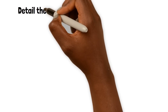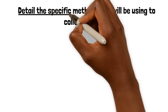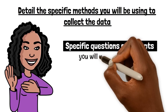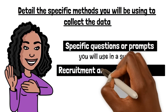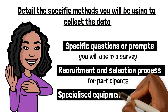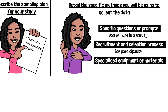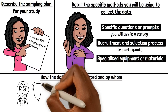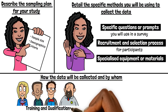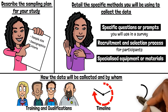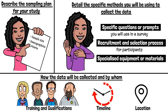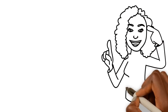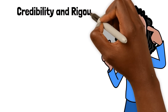Then detail the specific methods you'll be using to collect the data. This could include the specific questions or prompts you'll use in your survey, the recruitment and selection process for participants, and any specialised equipment or materials needed. It is also important to explain how data will be collected and by whom. This could include details on the training and qualifications of the research staff, as well as the timeline and location for data collection.